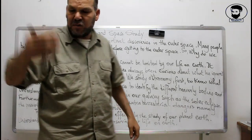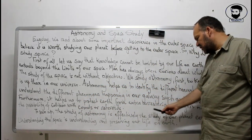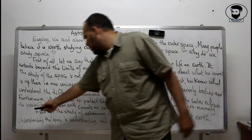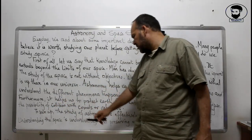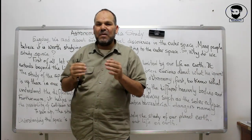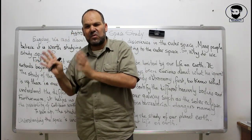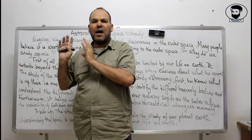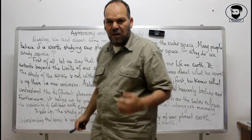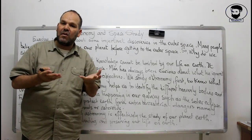Furthermore — meaning in addition to this — astronomy helps us to protect Earth from extraterrestrial dangers, namely the possibility of collision between Earth and comets or asteroids. When a comet or an asteroid is coming through space towards Earth, before it reaches the limits of our planet, satellites take photos and we know beforehand when, how, and at what speed it is coming towards Earth, so we can find solutions to avoid this collision. Astronomers are asked to identify, interpret, understand, and protect ourselves from all the dangers that may come from space.